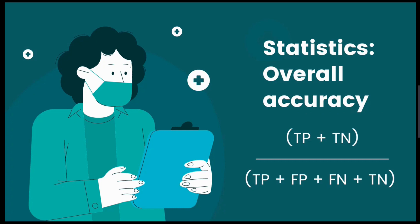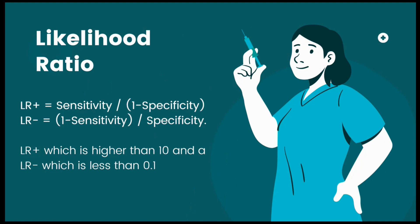To determine the overall accuracy, you need to have the combined figure for true positives and true negatives. We also need the likelihood ratio, which is how likely a test result would be expected in a patient with a disease of interest compared to the likelihood of the same result in a patient without the disease of interest.